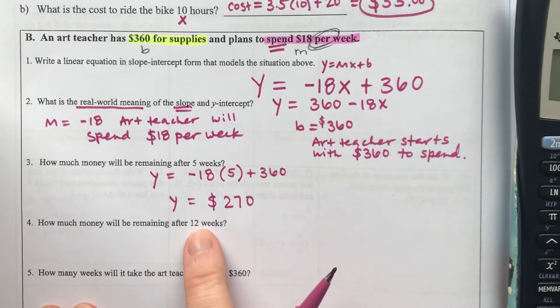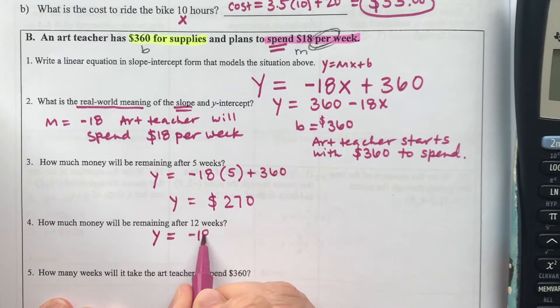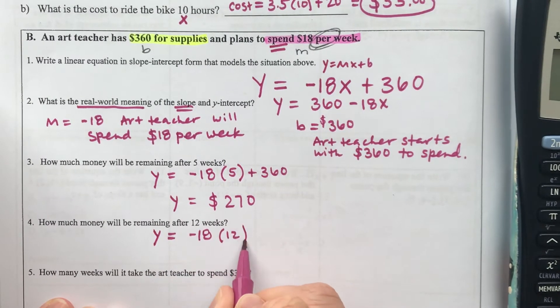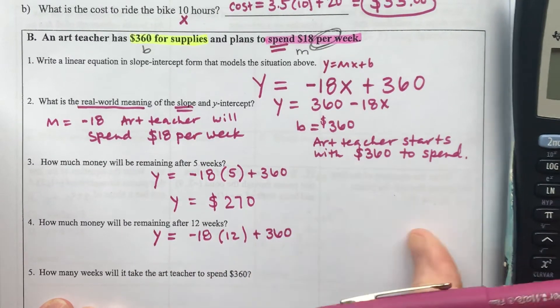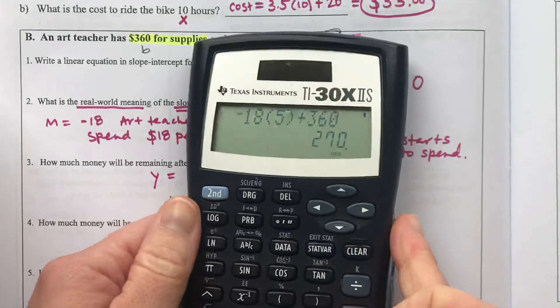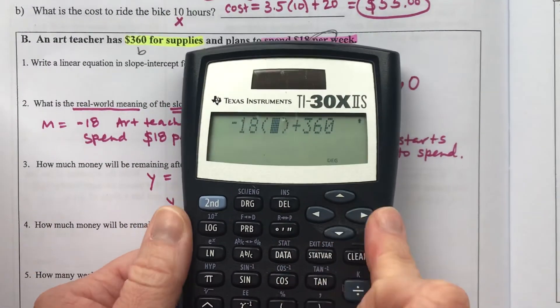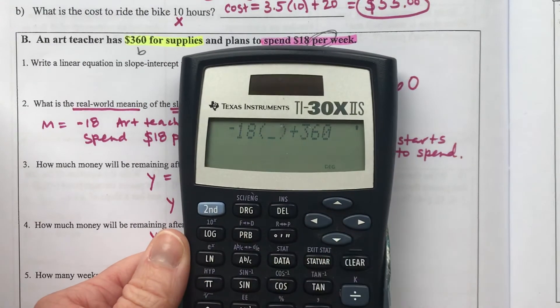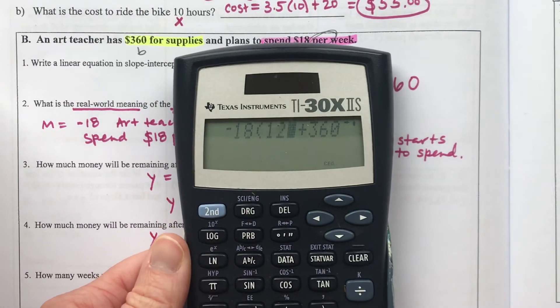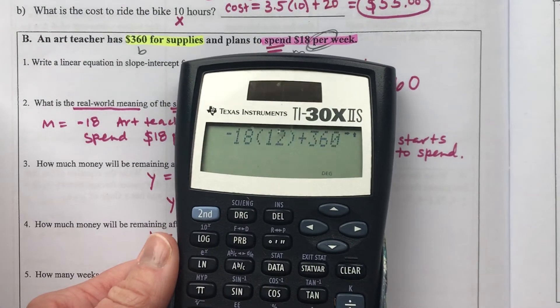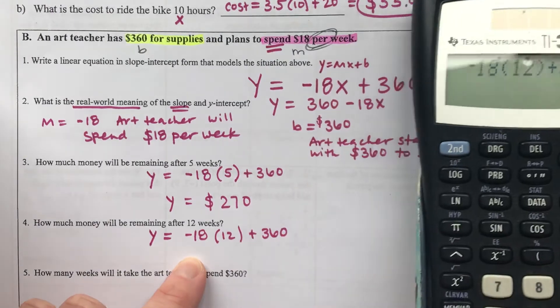Then, how much money will be remaining after 12 weeks? Again, we put the number of weeks into our function. Plugging in 12: y = -18(12) + 360 equals $144 left to spend.